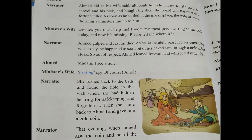So as he couldn't send his wife back, he sold his shovel and pick, got some money, and bought the dice and the robe — the dress of a fortune teller. He purchased the robe from the marketplace and sat there. As soon as he sat, the wife of one of the ministers ran up to him. She had worn her precious ring to the bath, forgotten to take it back, and now it was missing. She came to the fortune teller and he had to tell her where it was. The narrator says Ahmed gulped — he had no idea about that ring, yet he had to tell.